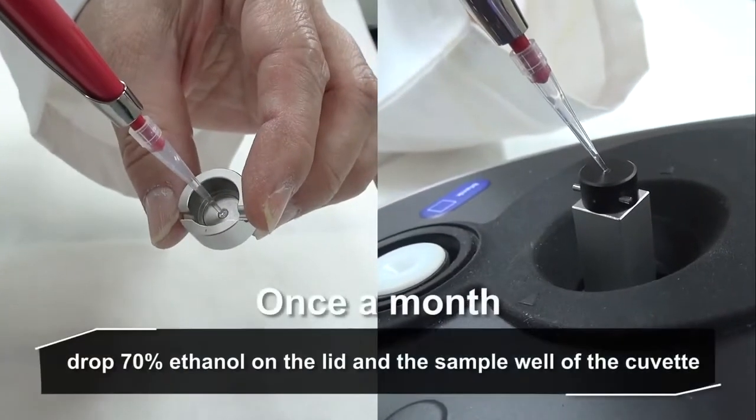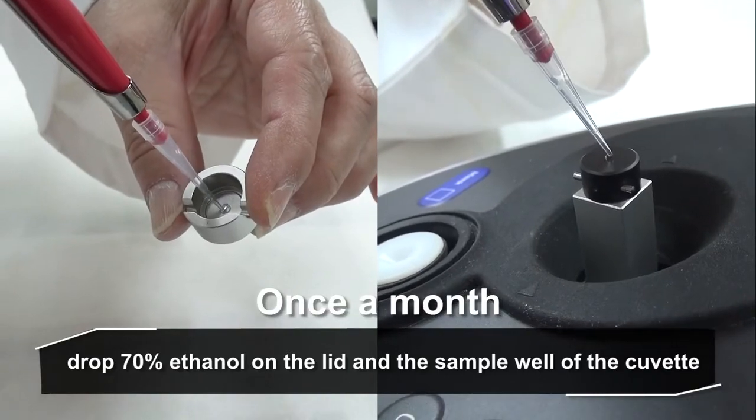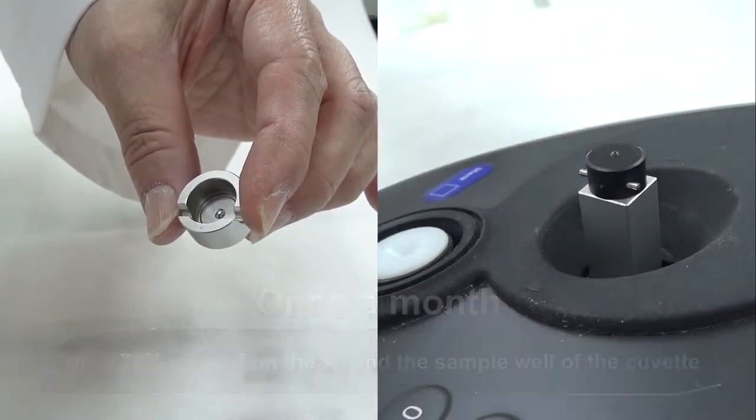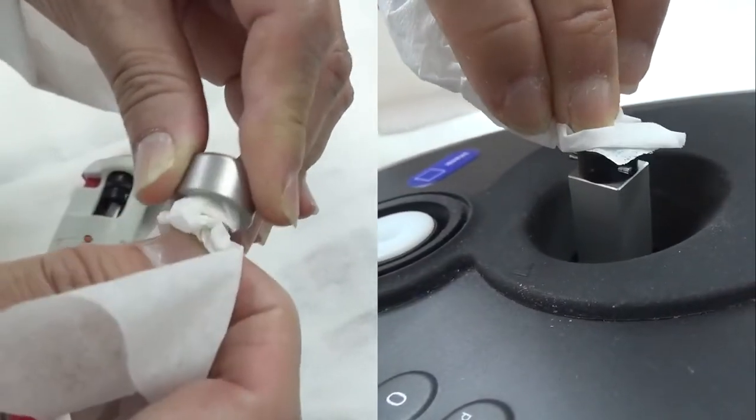21. Once a month, drop 70% ethanol on the lid and the sample well of the cuvette, and wipe clean with a Kimwipes tissue.